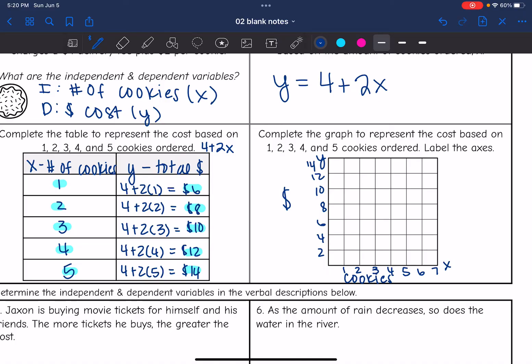Now I should be able to plot these points. So 1, 6, 1 cookie cost $6, 2 cookies was $8, 3 was $10, 4 was $12, and 5 was $14.